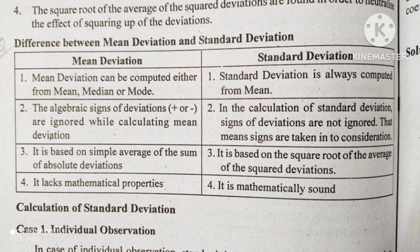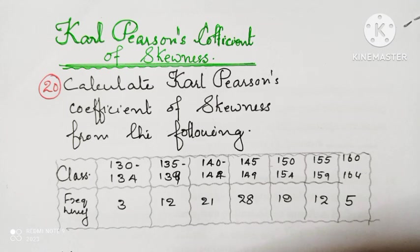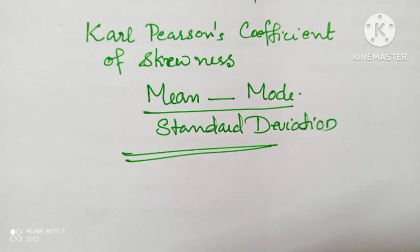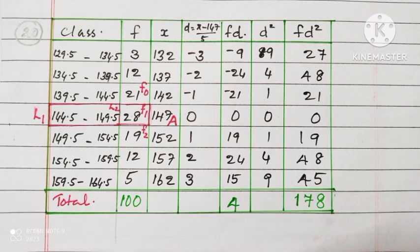Next five more questions from part B is question number 19: distinguish between mean deviation and standard deviation. Question number 20: calculate Karl Pearson coefficient of skewness from the following. The datas are given, classes are given, frequencies are given. The formula for finding Karl Pearson coefficient of skewness is mean minus mode divided by standard deviation. So we have to find mean, mode and standard deviation.